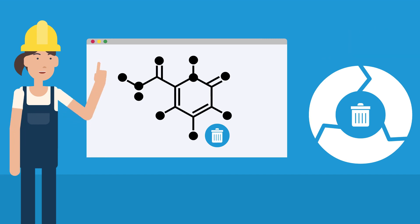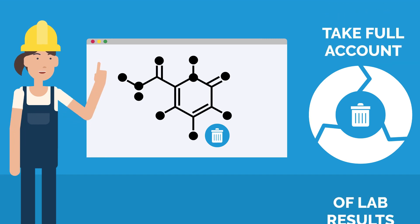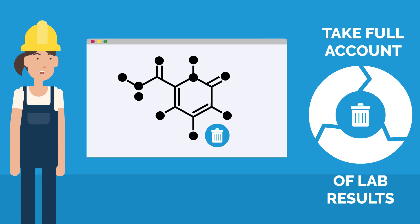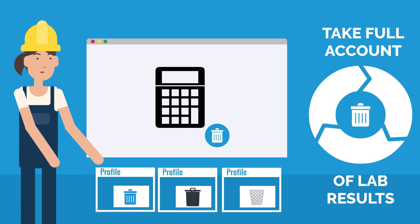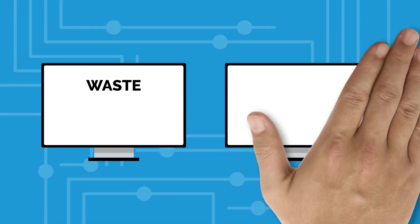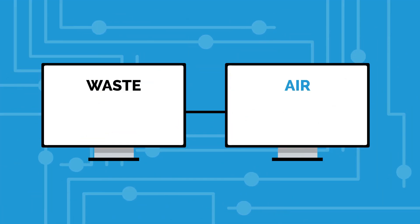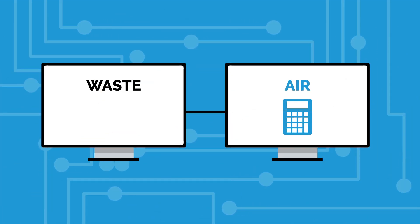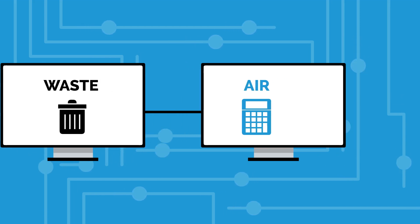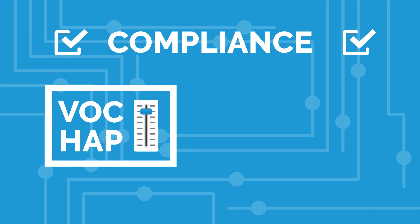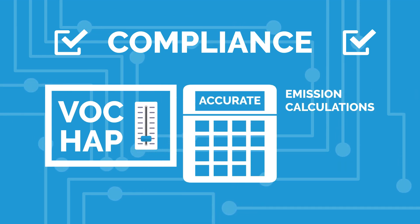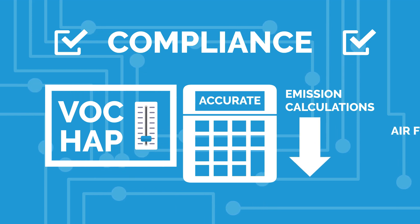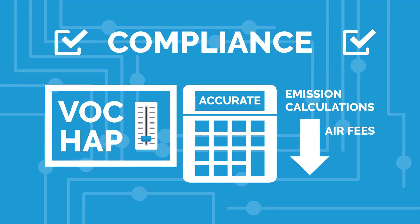The ERA system is also able to take full account of lab results in the processing of waste, producing testing-derived waste profiles when calculating emissions credits. ERA's waste tracking module is linked to the air tracking module, which allows for calculating air emission reductions as a result of waste shipments. This ensures compliance with tight VOC and HAP emission limits, more accurate emission calculations, and reduced air fees calculated based on air emission amounts.